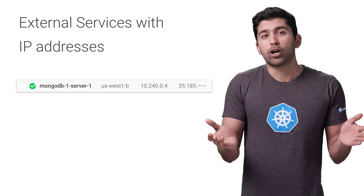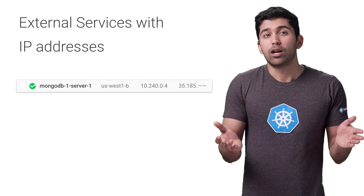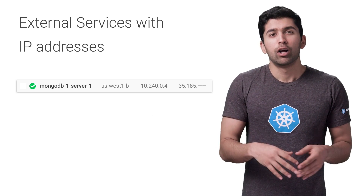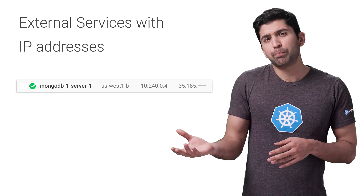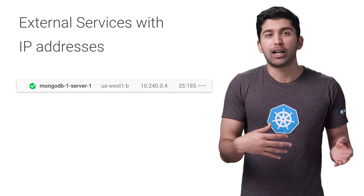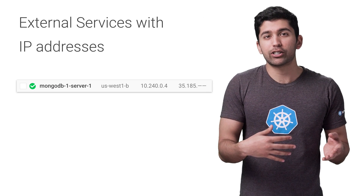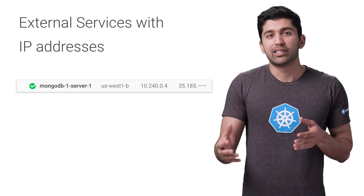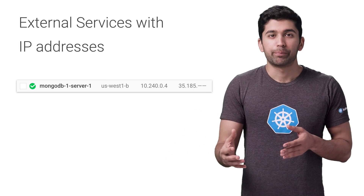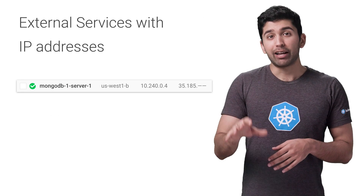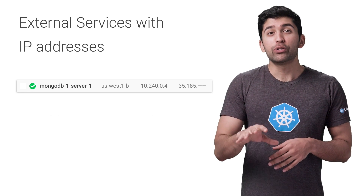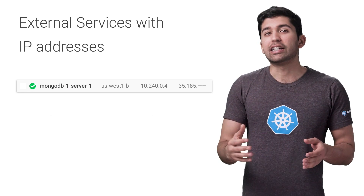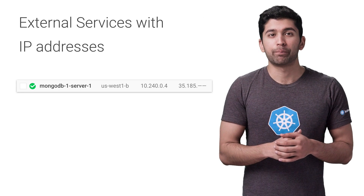So let's say you're running a MongoDB database on Google Compute Engine. Hopefully at some point you can bring a database inside the cluster, but until then you're stuck in this hybrid world. Thankfully, you can use static Kubernetes services to ease some of the pain.